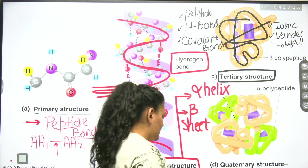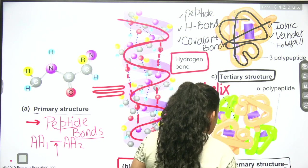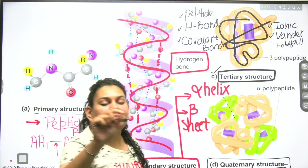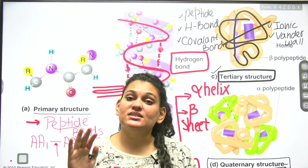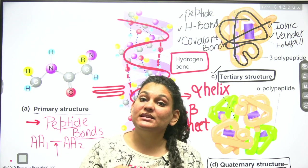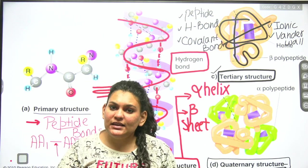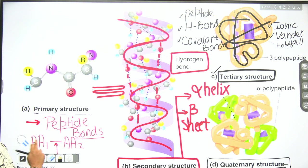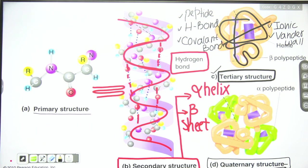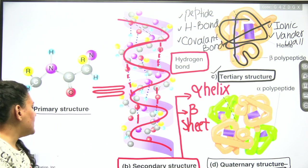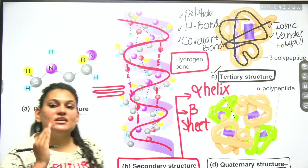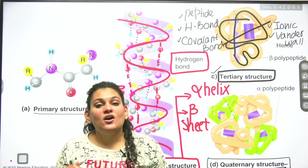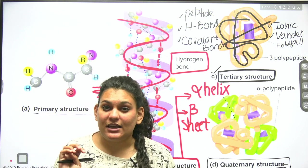After tertiary comes the last structure — the quaternary structure. The quaternary structure is a highly 3-dimensional structure. Up to tertiary, we saw only a single peptide chain. The quaternary structure is a 3D arrangement formed by the joining of more than one polypeptide chain — when multiple peptide chains join together, they form the quaternary structure.